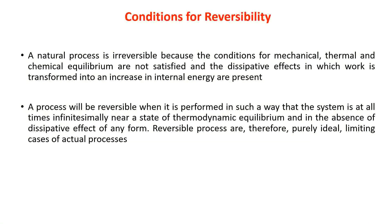Conditions for irreversibility — a natural process is irreversible because the conditions for mechanical, thermal, and chemical equilibrium are not satisfied, and dissipative effects in which work is transformed into an increase in internal energy are present. A process will be reversible when it is performed such that the system is at all times infinitesimally near a state of thermodynamic equilibrium and there is an absence of dissipative effects of any form. Reversible processes are therefore purely ideal limiting cases of actual processes.